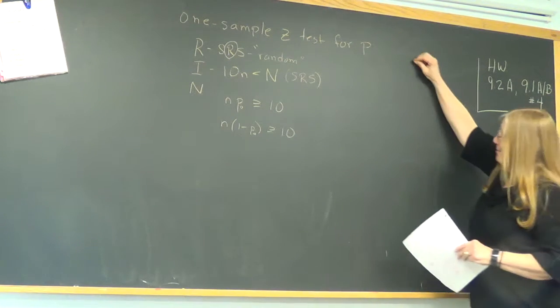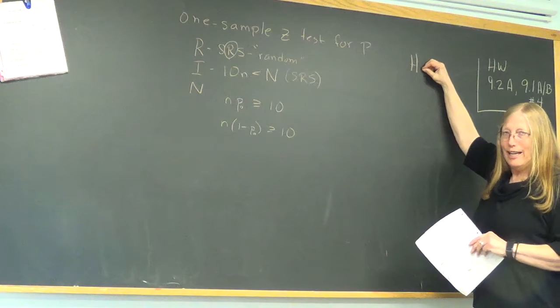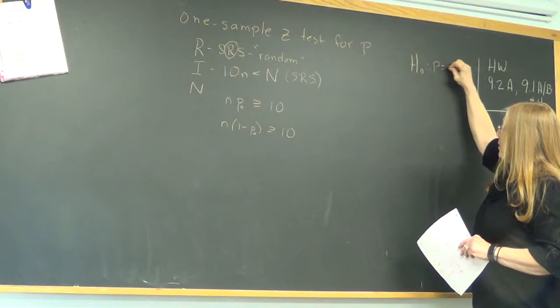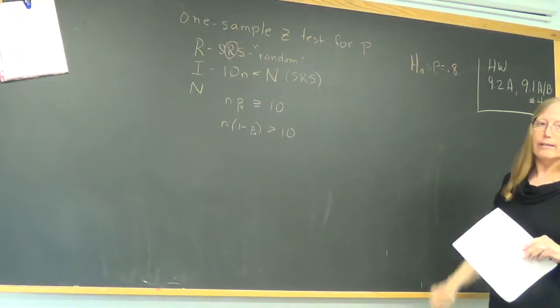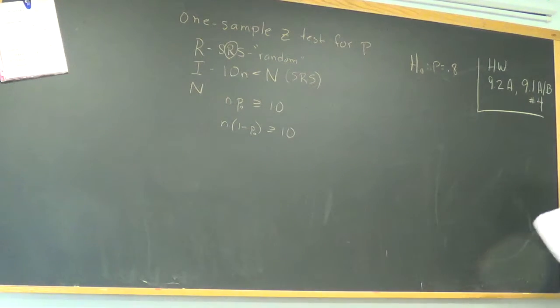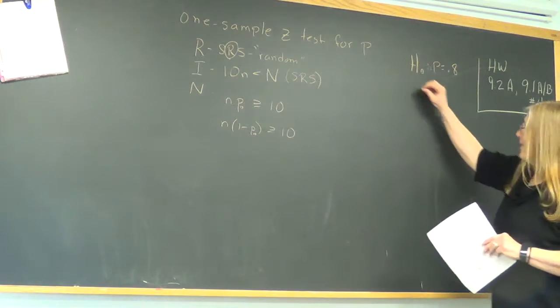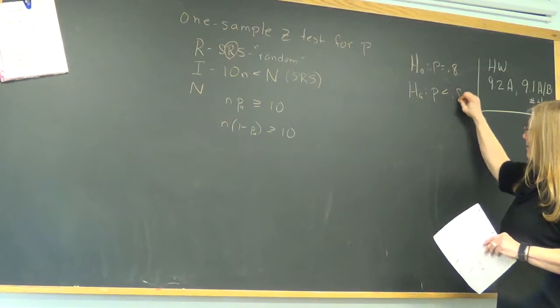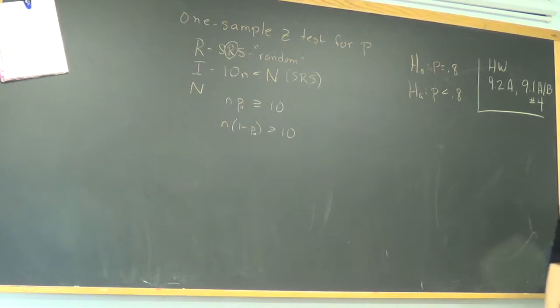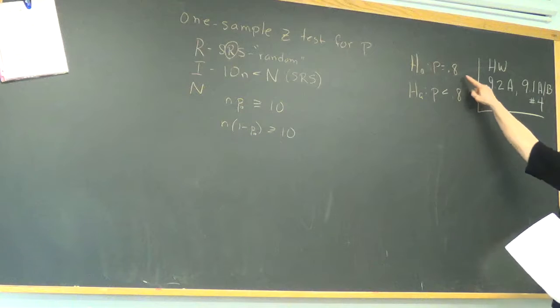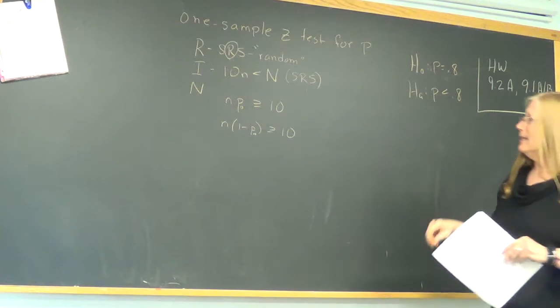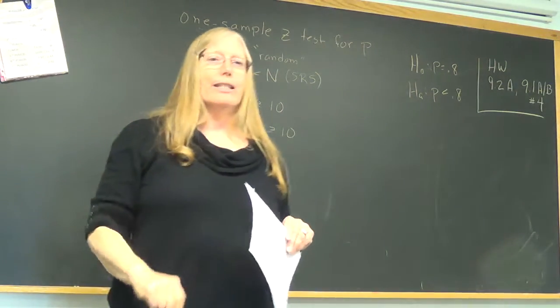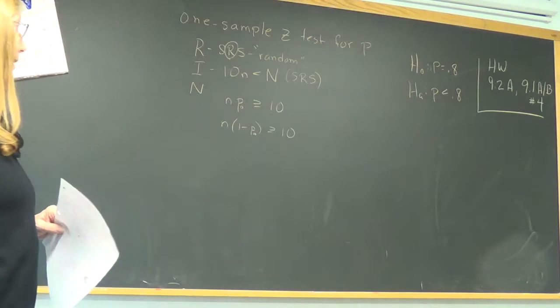So you'll recall that, like, say when we started out with me in the basketball example, H sub O was P equals 0.8. Remember, I claimed that I had a 0.8 average proportion of my free throws that would go in. And alternatively, we probably thought that my proportion was a lot lower than that. P-naught is this value right here, 0.8.